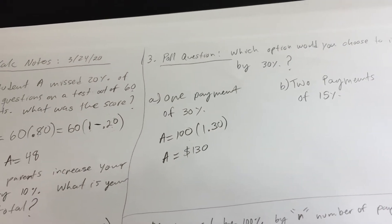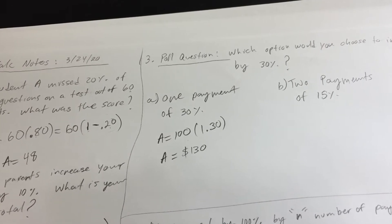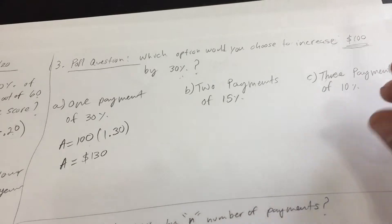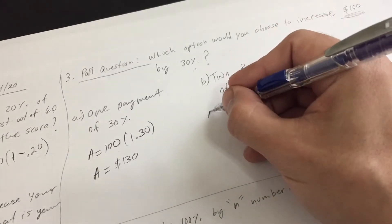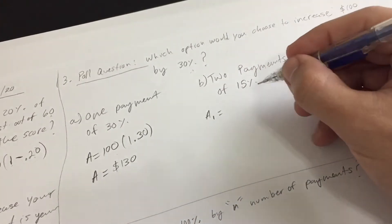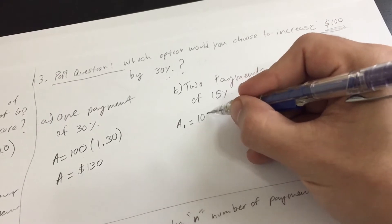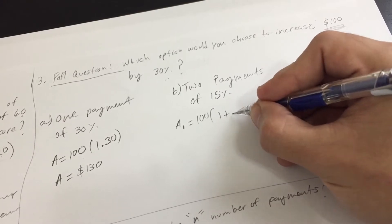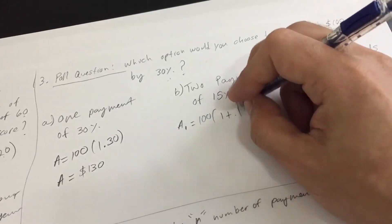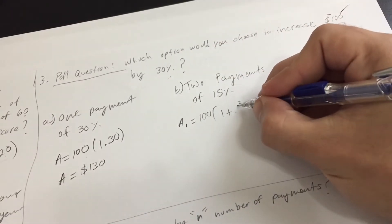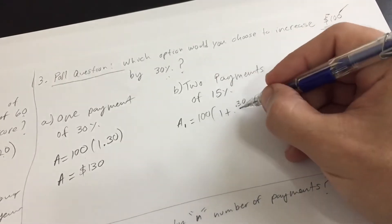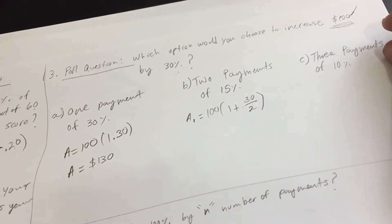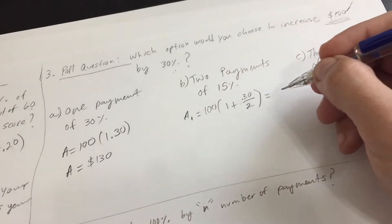Next option: what if you split that 30% into two payments of 15%? For the first payment, amount one equals 100 times (1 + 0.15). How do we get 0.15? We took 0.30 — the original percentage — and divided it into two payments. So that first amount equals 100 times 1.15.